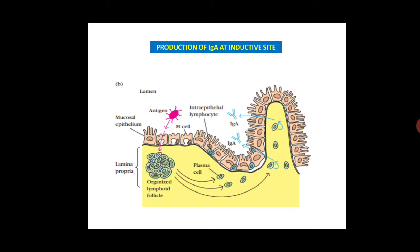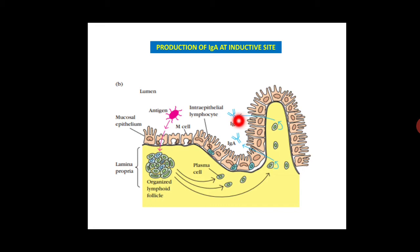This is a diagram in which antigen enters into the lamina propria via M cells. Inside the lamina propria, lymphoid follicles contain B cells that get activated by antigen and start differentiating into plasma cells. Plasma cells produce immunoglobulin A class of antibodies and are transported across the epithelial cells, released as secretory immunoglobulin A antibodies.